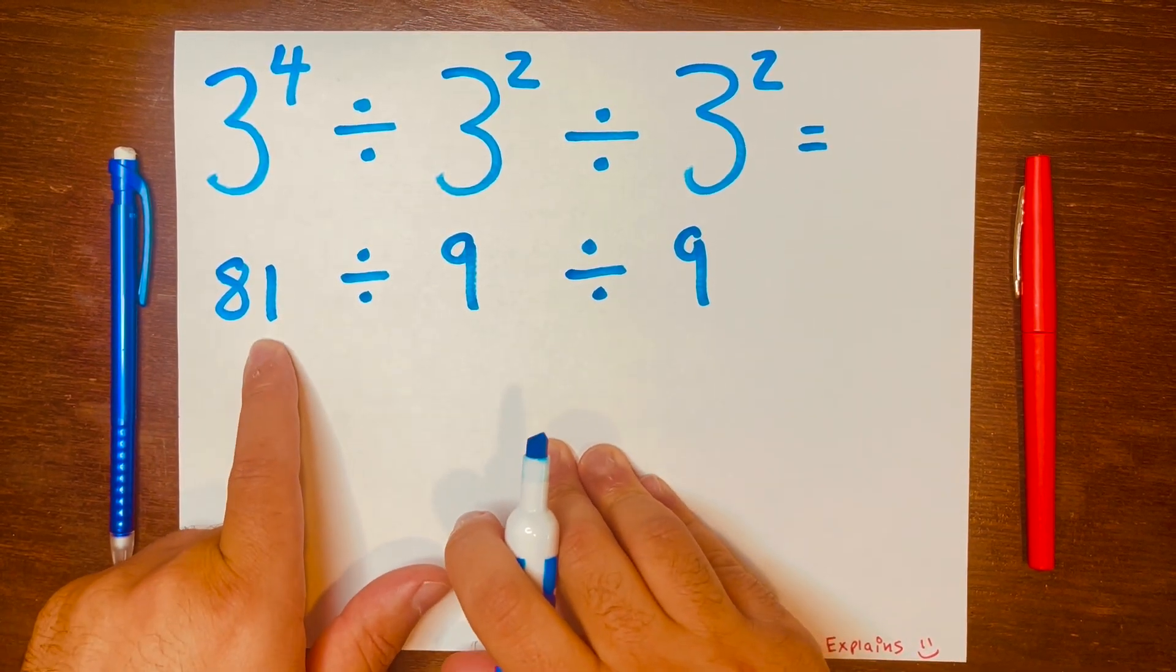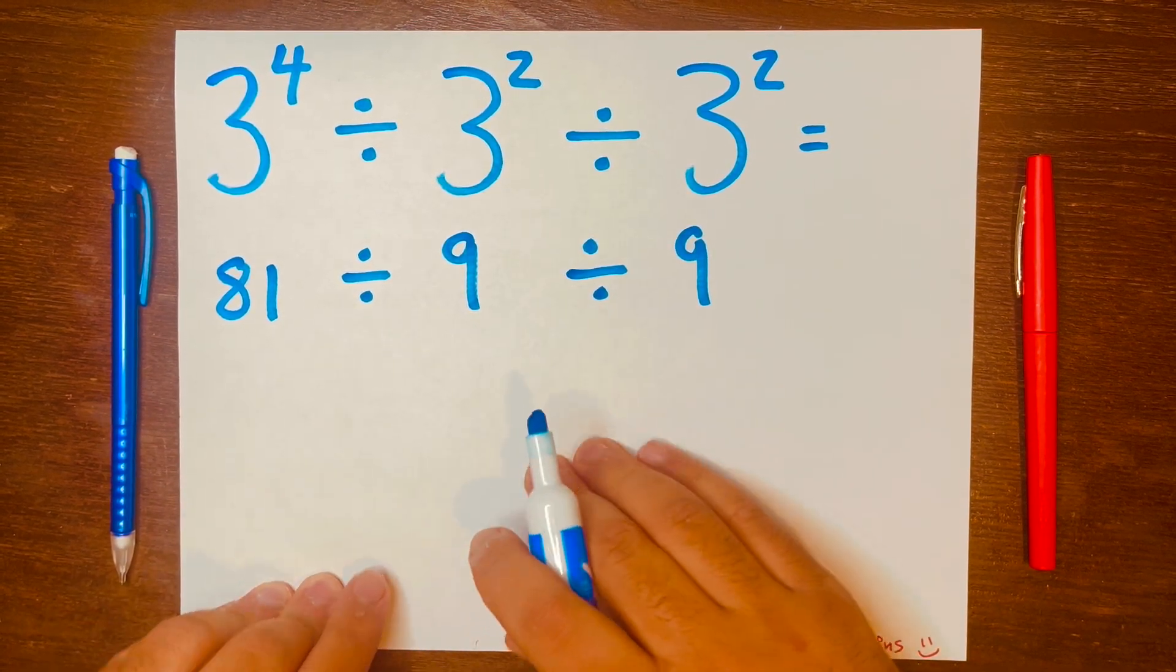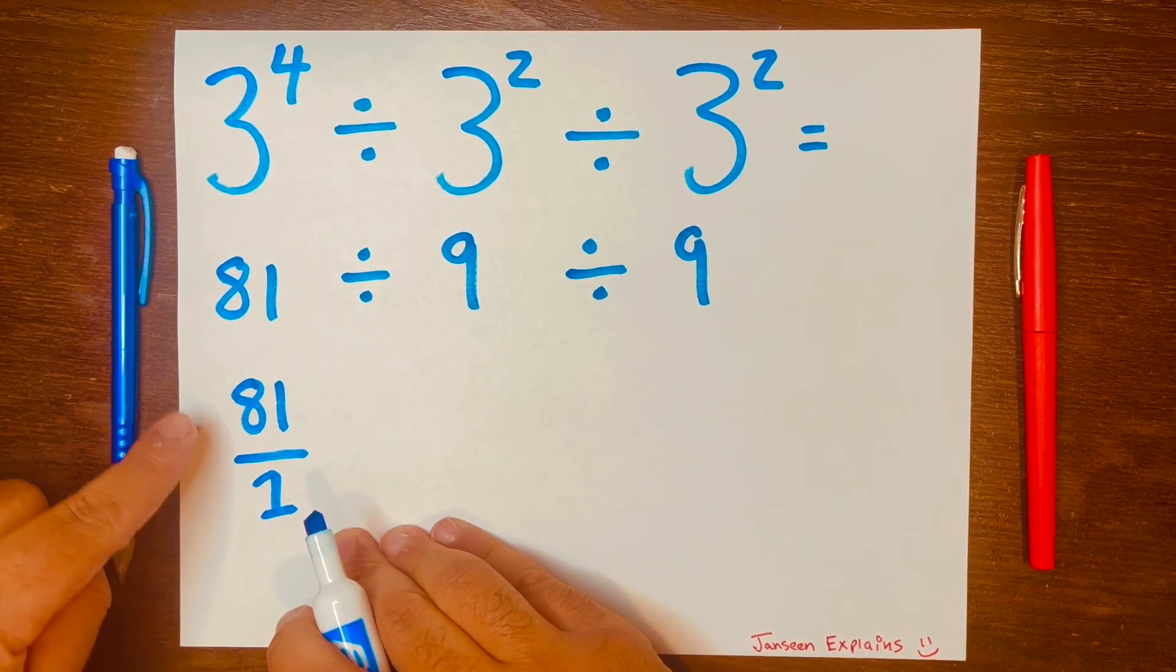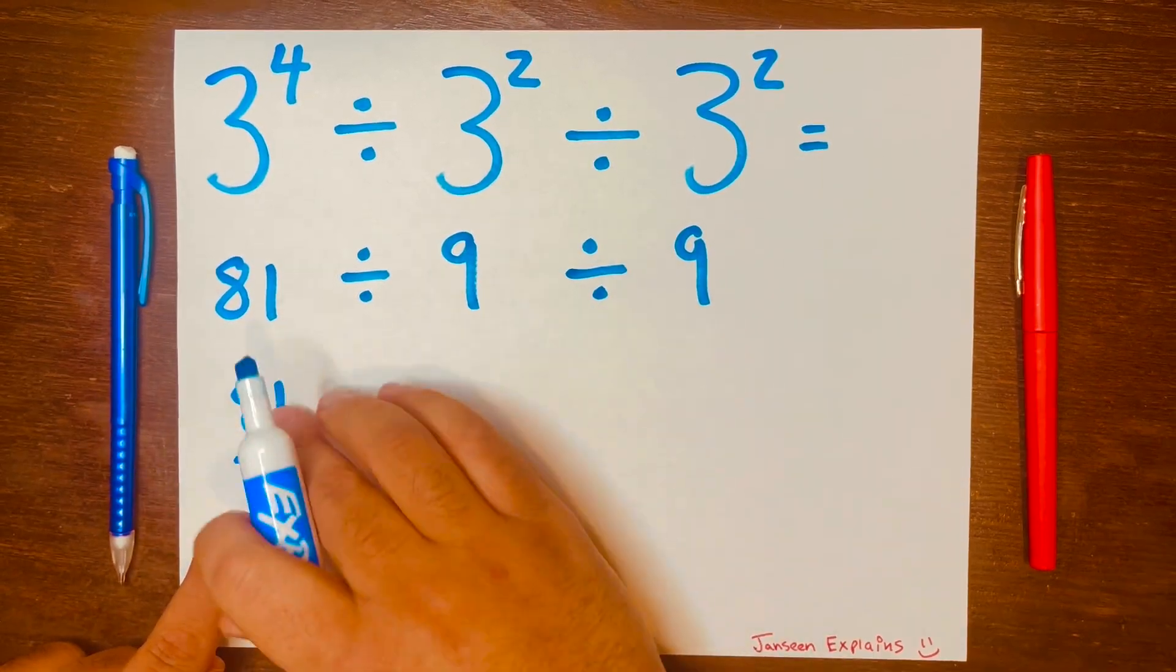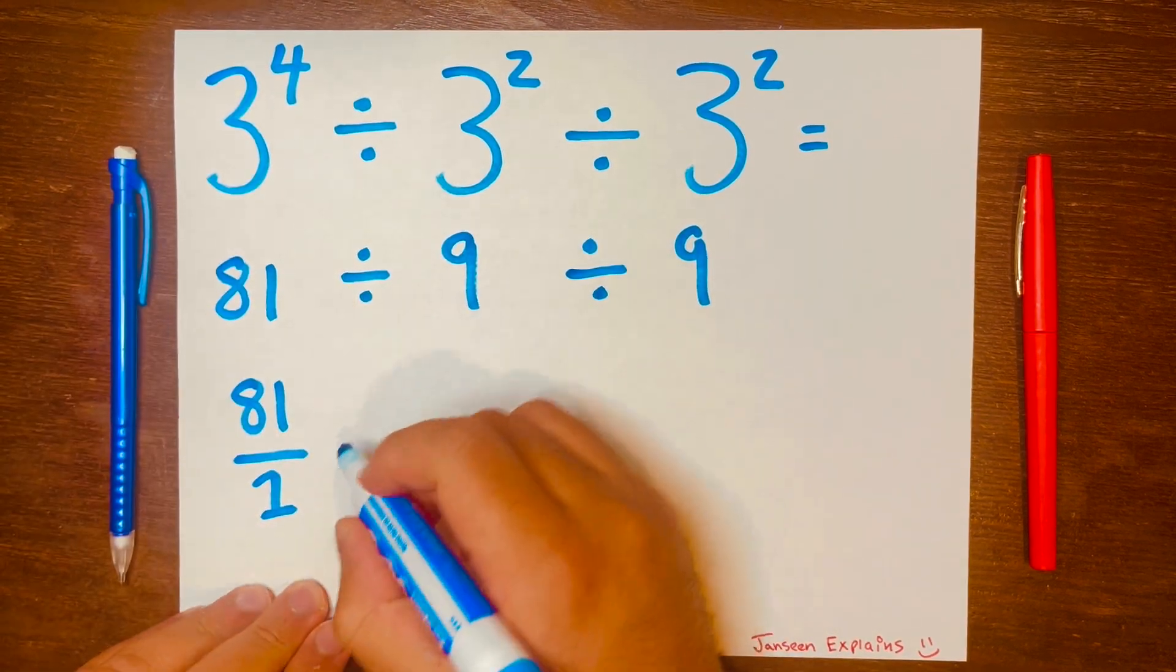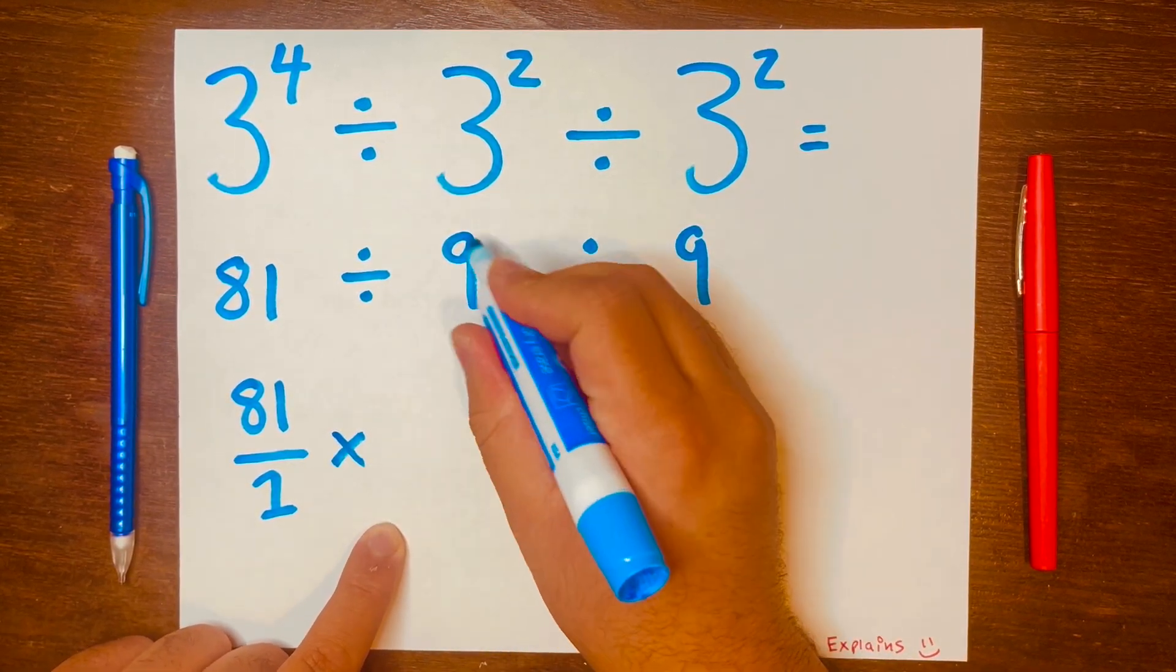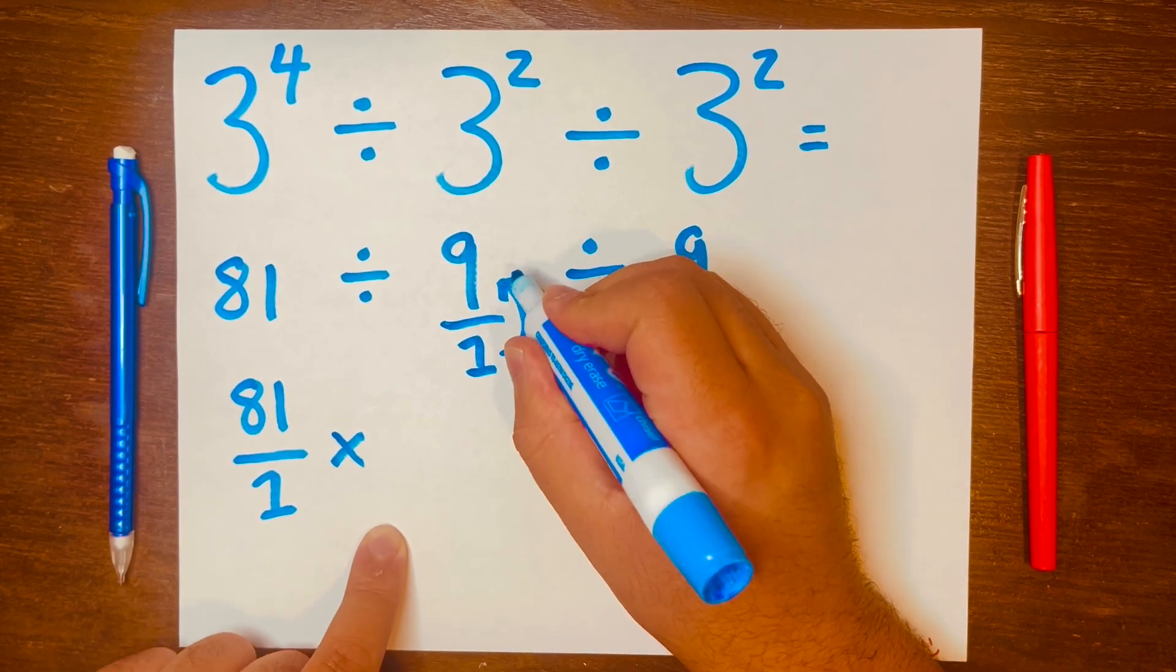So 81 divided by nine, we can use the keep-change-flip method. So we'll write 81 over one, write it as a fraction. And we're keeping 81 because we know 81 divided by one is 81, does not change the 81. And then we change the division symbol to multiplication. And then lastly, we'll flip a fraction here. We don't have a fraction, but we can turn this nine into a fraction, so the one will go on top of the fraction and the nine will go at the bottom of the fraction.